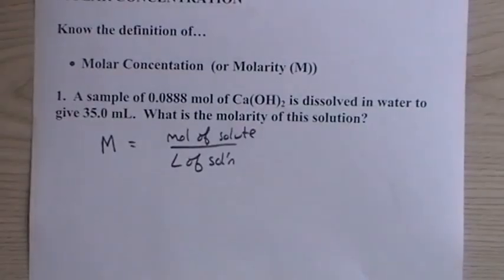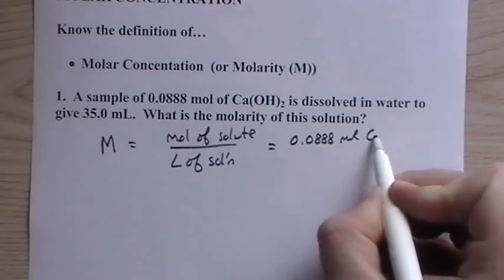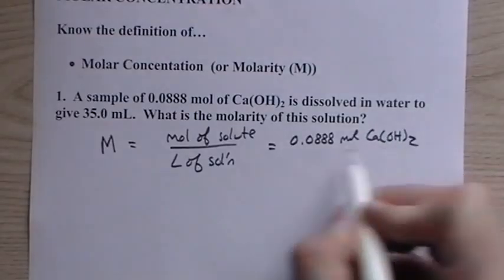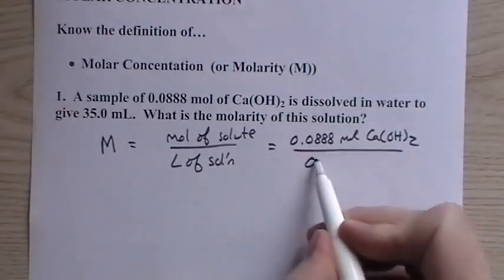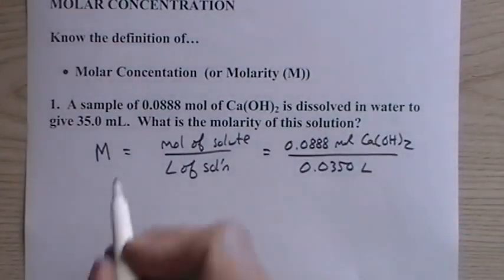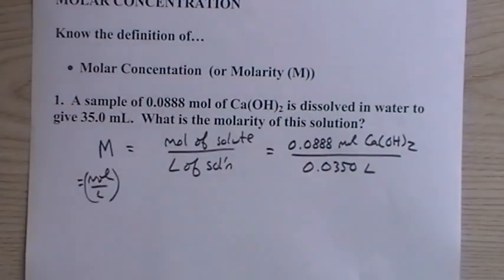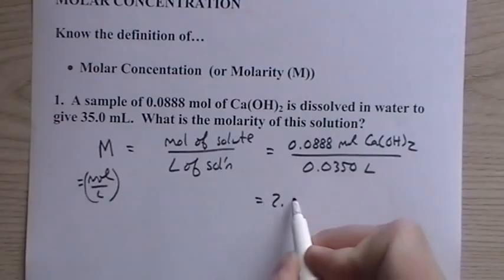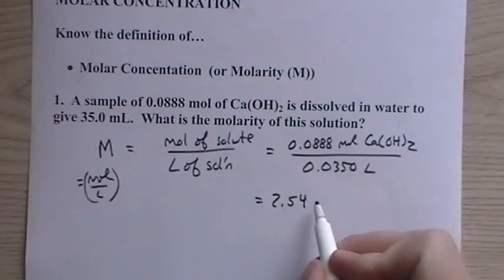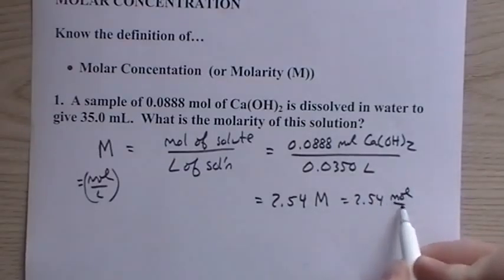The moles of solute in this case, we have 0.0888 moles of calcium hydroxide divided by 35 mL, you have to change that over to liters. That's the big thing. When we're dealing with molarity, that's moles per liter. That capital M is moles per liter, so you've got to be careful. And this comes out to be 2.54 molar, equals 2.54 moles per liter, just to show the same thing.